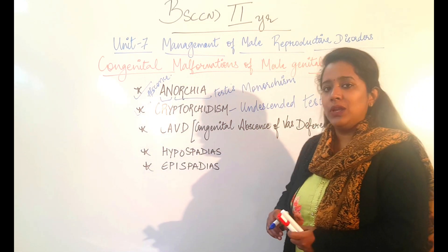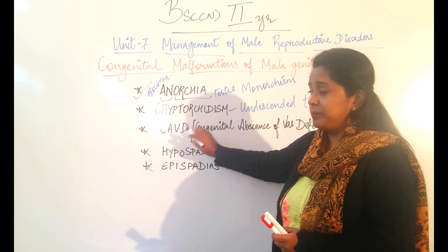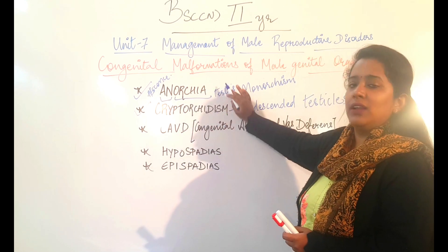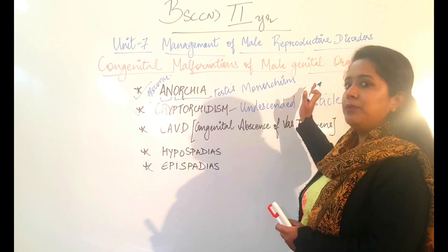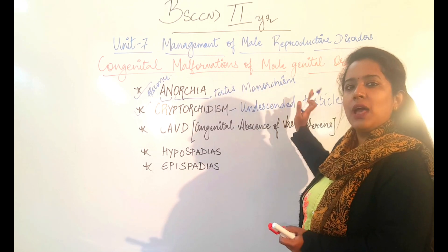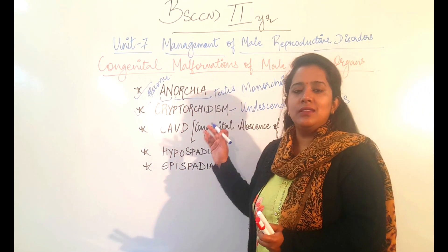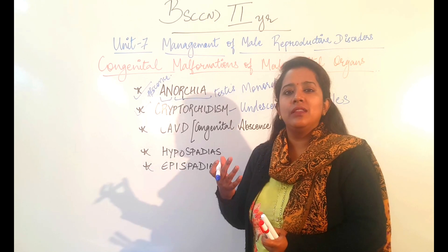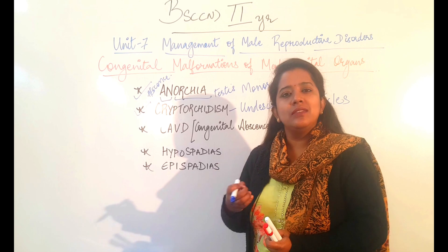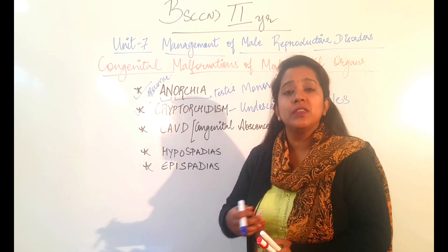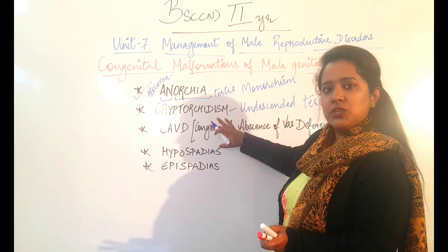The next condition is CAVD — Congenital Absence of Vas Deferens. Comparing the previous disorders, in Anorchia and undescended testes, the testes are not at the right location or not present at all, so sperm production is affected, partially or completely. In CAVD, the vas deferens is absent.